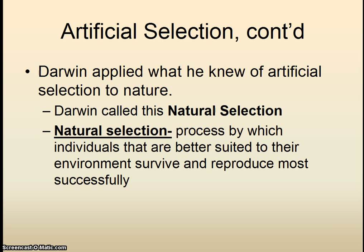Darwin was a scientist. He knew of the predominant scientific theories of his day. He knew what artificial selection was and that people had been doing it ever since people had been around. Darwin thought to himself: I wonder if there's a process in nature that's similar to what humans are doing with artificial selection. He called this natural selection — a process out in the wild where nature selects which creatures are the best suited to survive and reproduce.